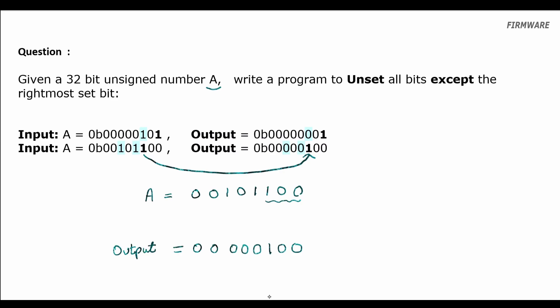Now, if we toggle all these bits in A, keeping the rightmost one and zeros on its right the same, after which we do an AND operation between A and this number, then we will have our solution. Okay, so if this is A, then what does minus A look like?